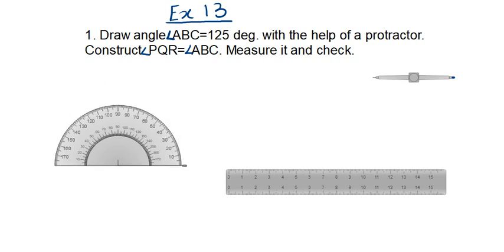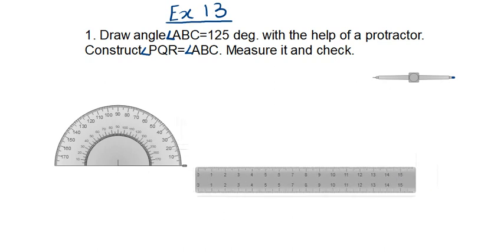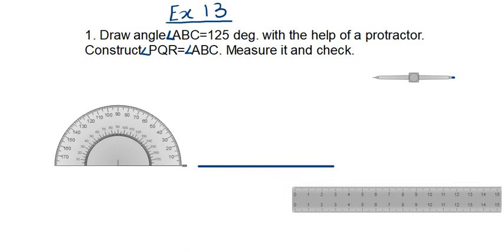First of all, let's draw the line with the help of the ruler. You can take it to any suitable length you want. Now I will name this line BC, because A will be at the top. So this is B and C.